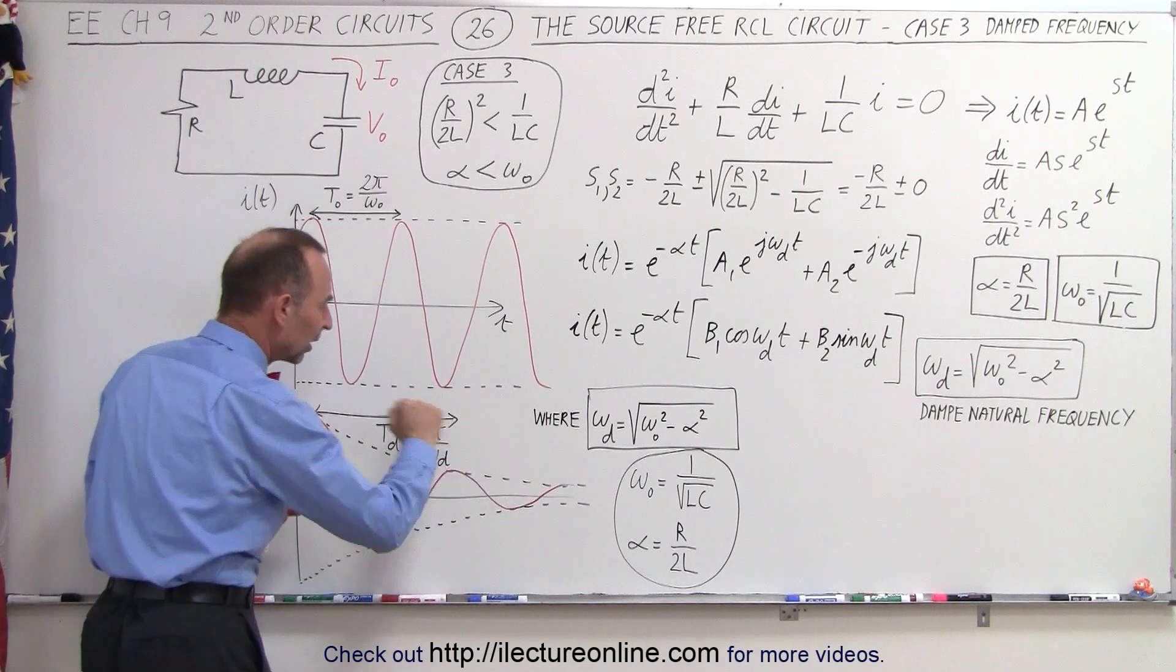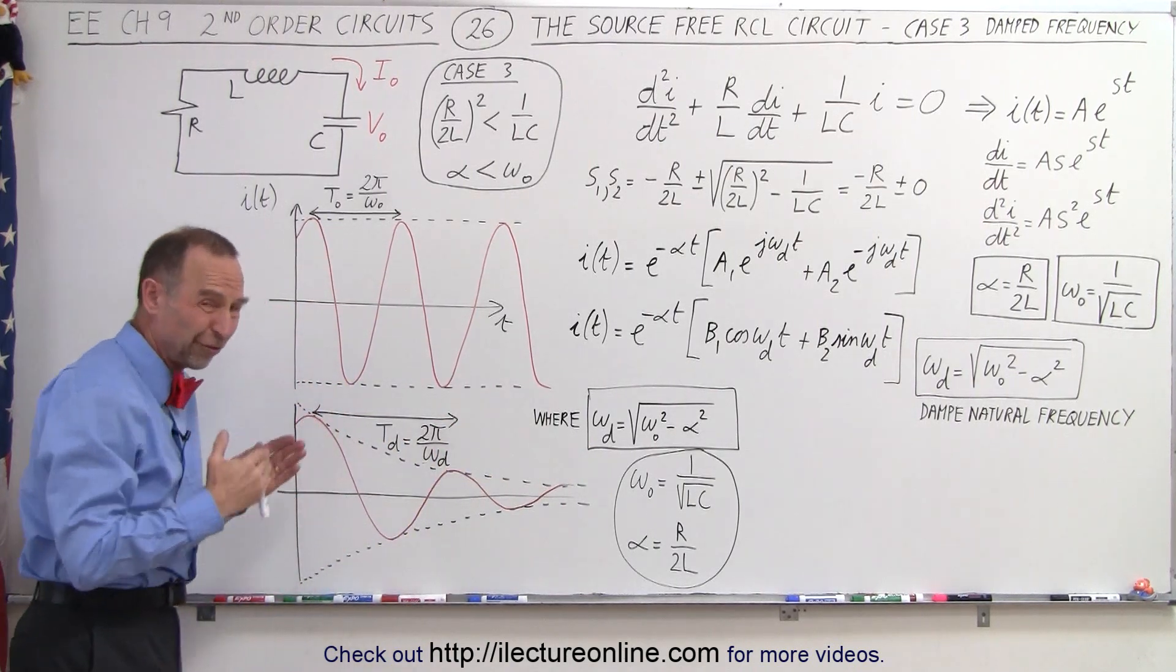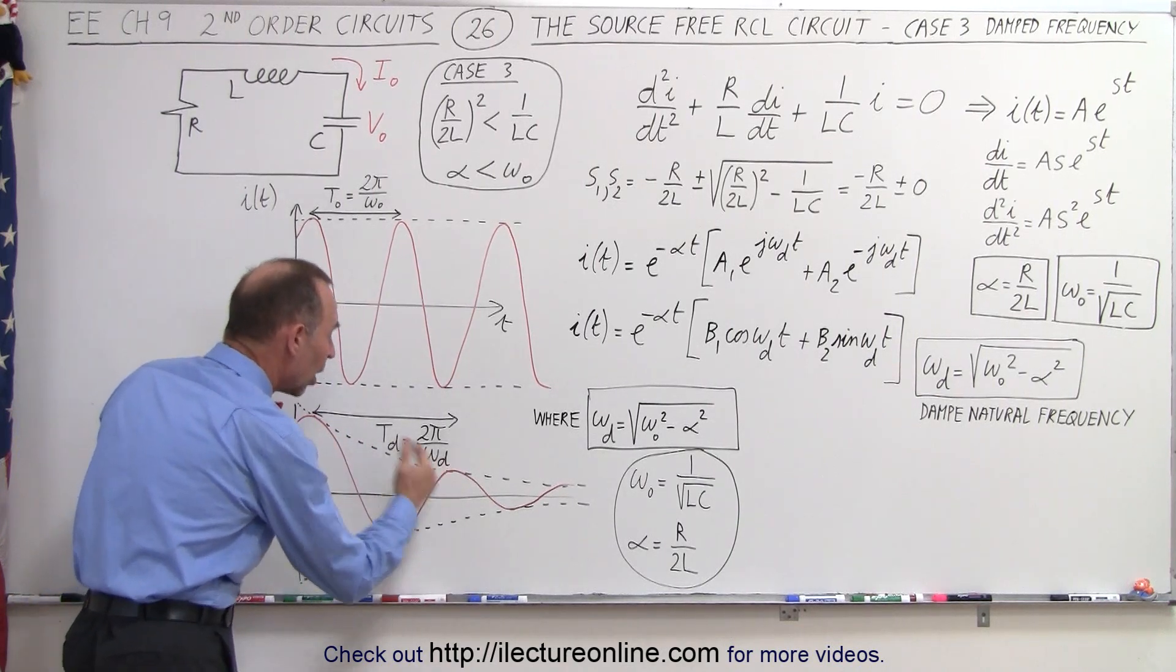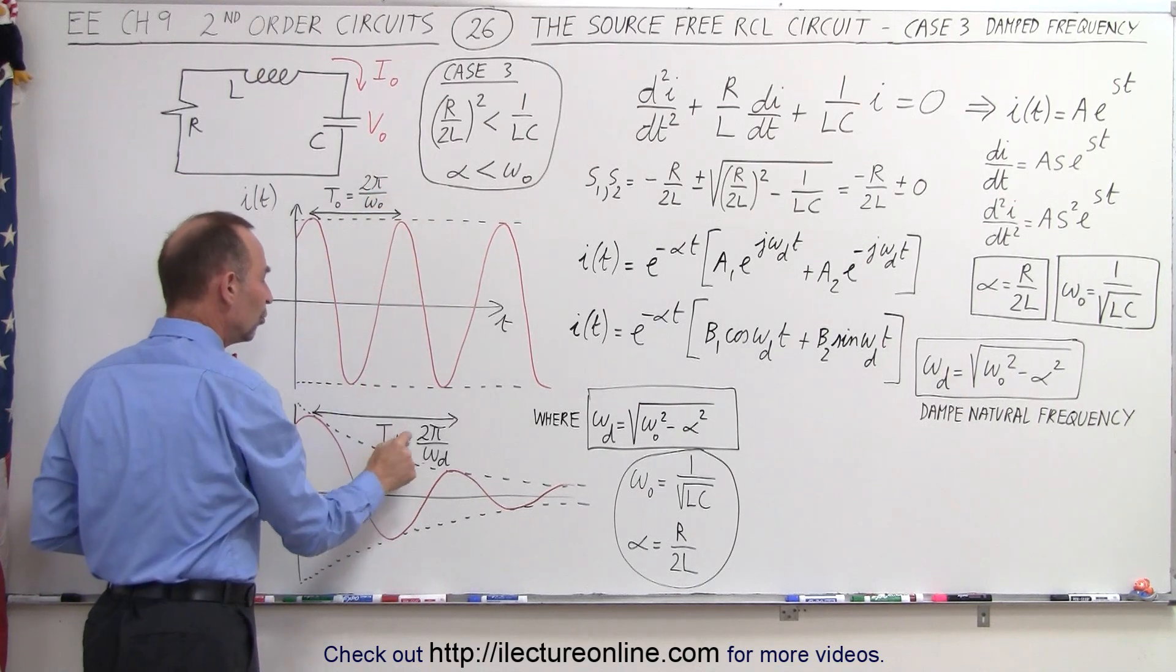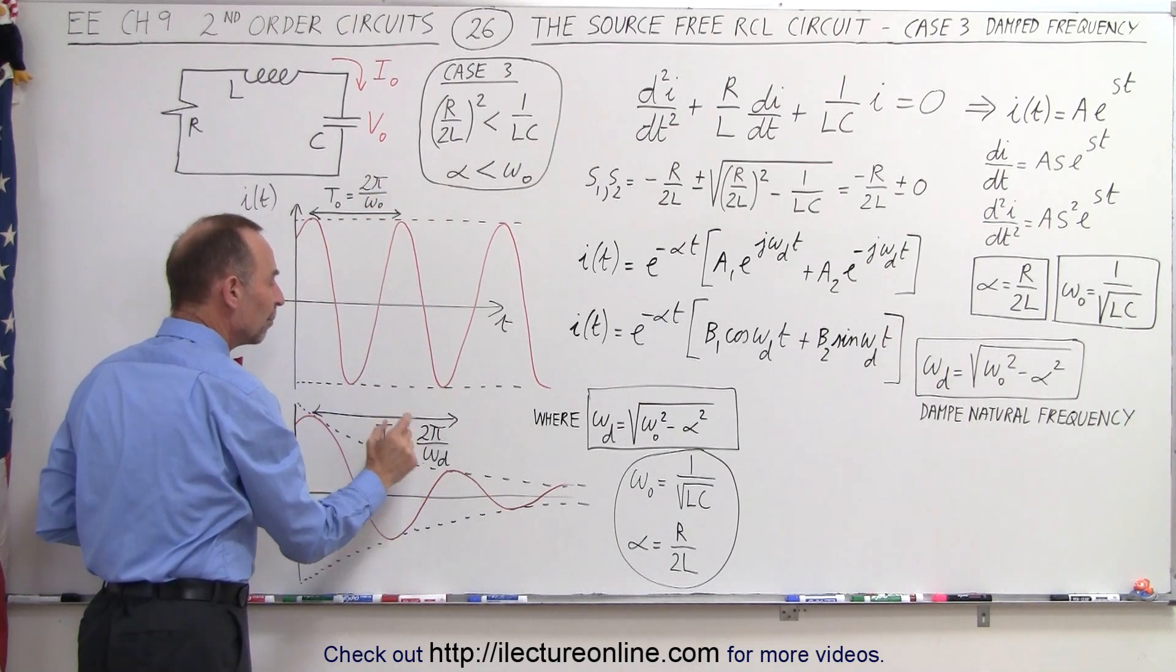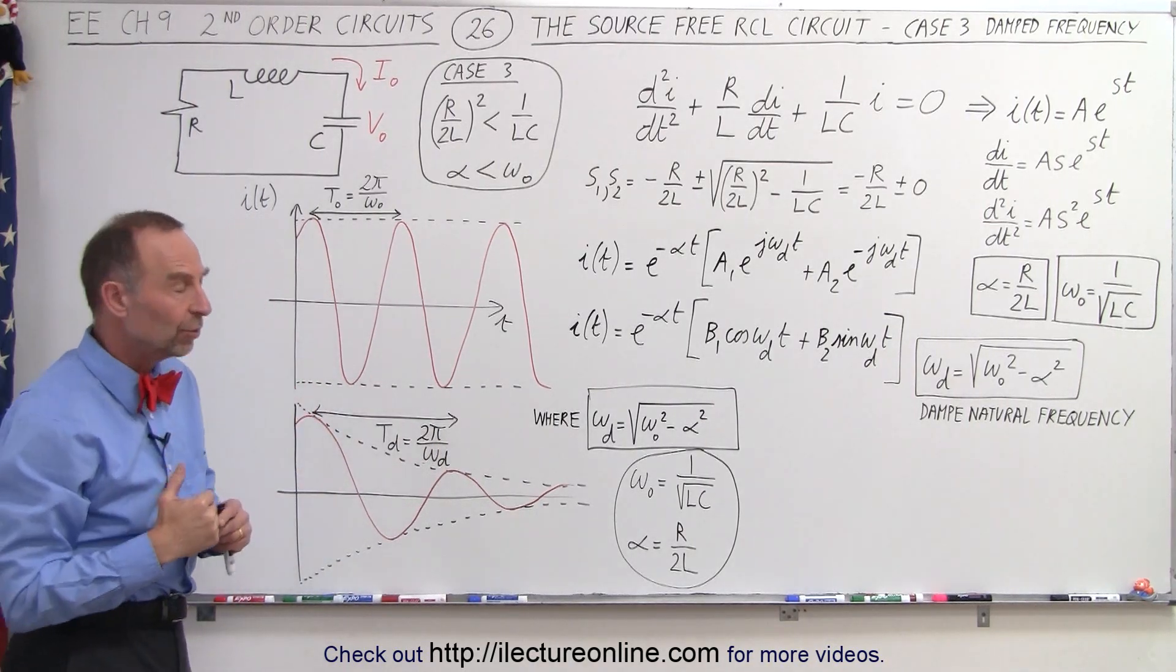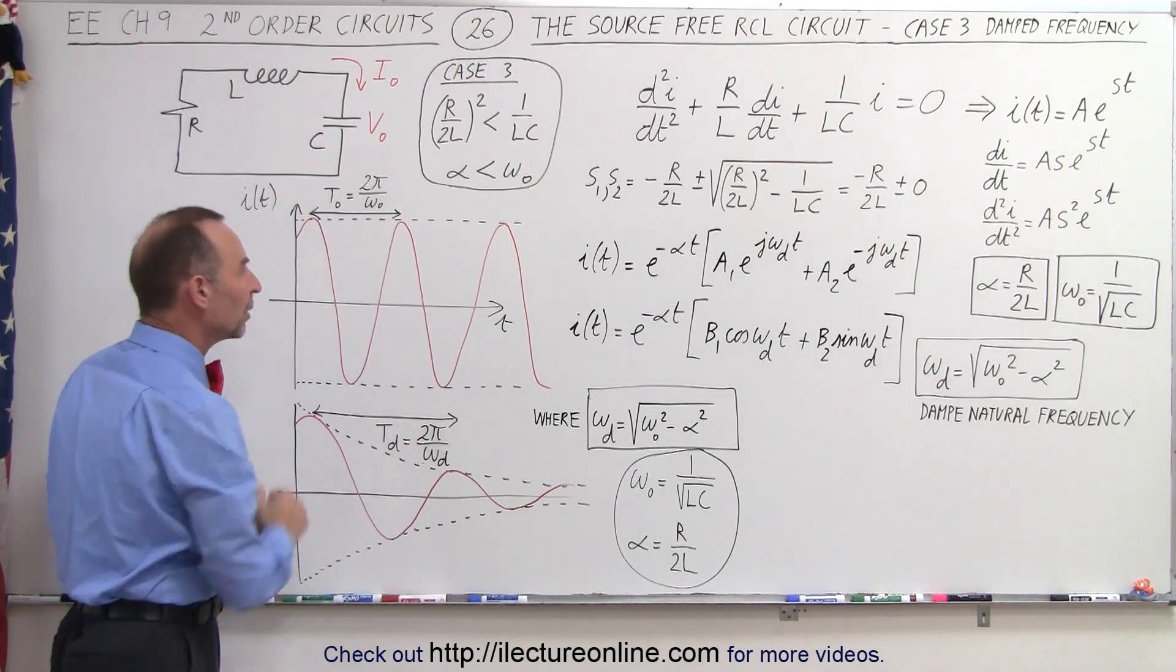But the frequency will be smaller and therefore the period will be longer. Notice instead of the period being 2π over the natural frequency, it's 2π divided by the damped natural frequency. And since the damped natural frequency is a smaller quantity, the period will be greater.